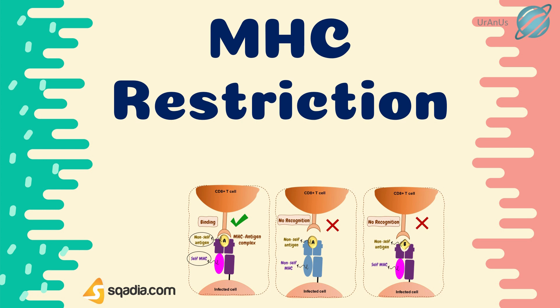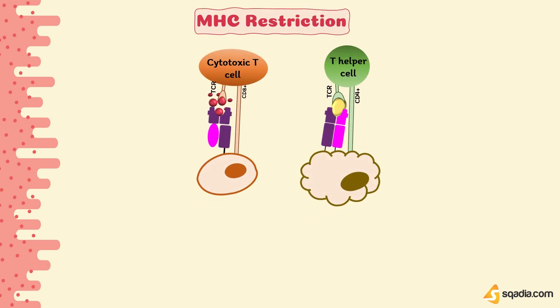When we say that MHC binds with the antigen and then presents it to the T cells, we also say that this antigen recognition by T lymphocytes is said to be MHC restricted. The major subsets of T lymphocytes — the T helper cells, CD4+, and the cytotoxic T lymphocytes, CD8+ — both have different MHC restrictions. The CD4+ T cell–APC interaction is MHC class 2 restricted, and the CD8+ T cell–target cell interaction is MHC class 1 restricted.